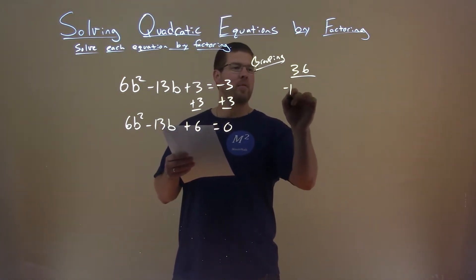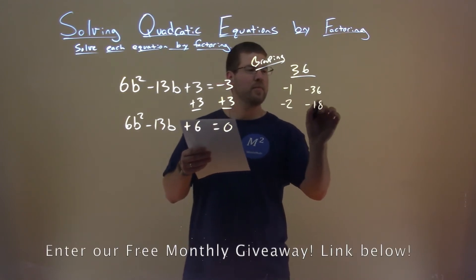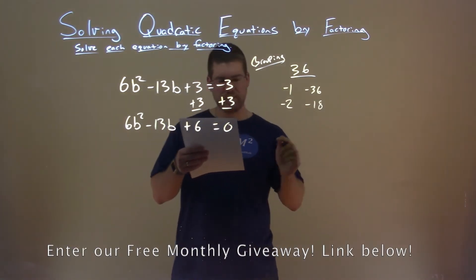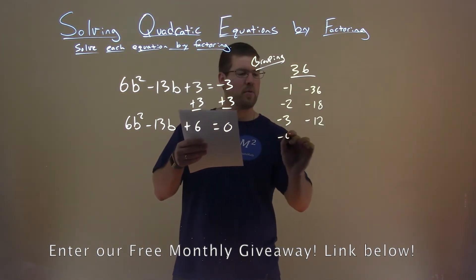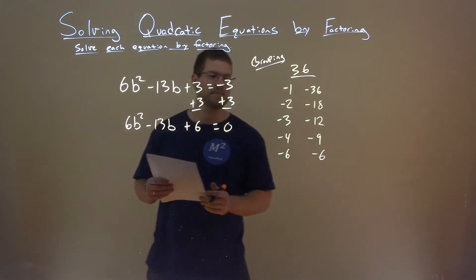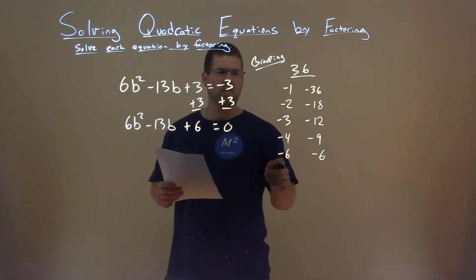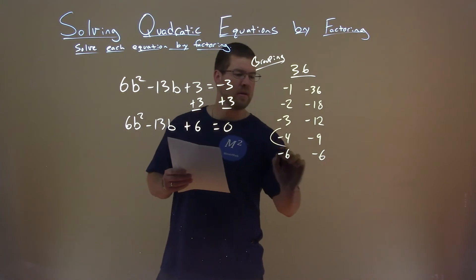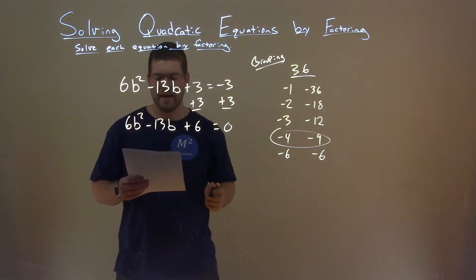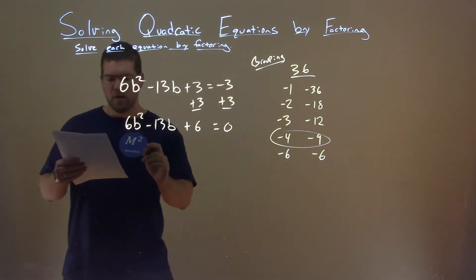We have a negative 1 and negative 36. Negative 2 and negative 18, both multiply to be 36. Negative 3 and negative 12, and negative 4 and negative 9, and negative 6 and negative 6. Which ones can I add together combined to be a negative 13? And that's right here, negative 4 and negative 9. We add them together, we get negative 13.